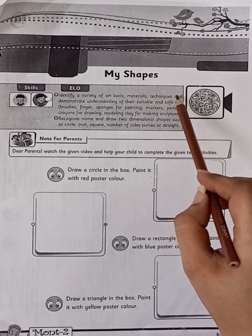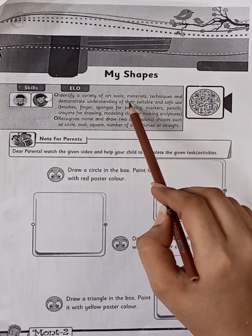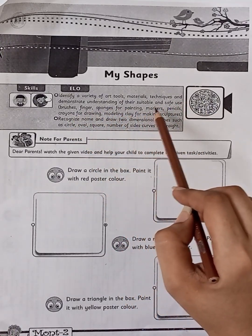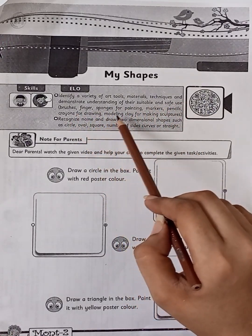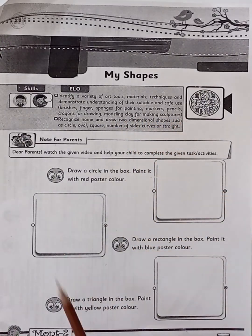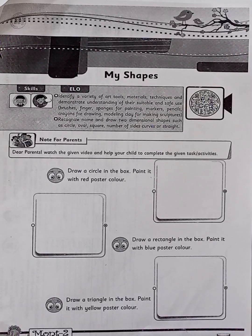Material techniques and demonstrate understanding of their suitable and safe use. Brushes, fingers, sponges for painting, markers, pencils, crayons for drawing, modeling clay for making sculptures. So we have to use these things in a suitable way.